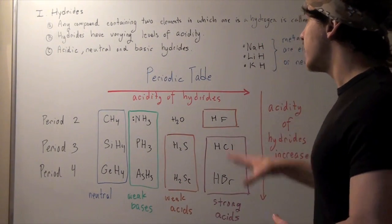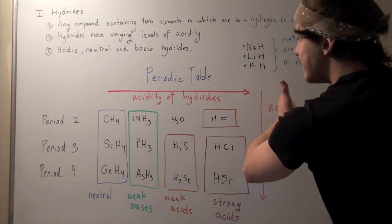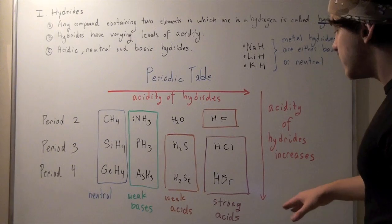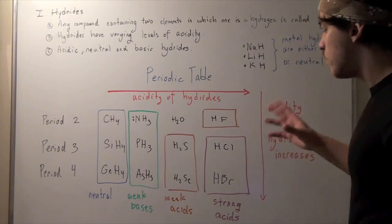Let's examine the right side of the periodic table. All the way on the right side and all the way down, we have strong acids. HCl and HBr are both strong acids.